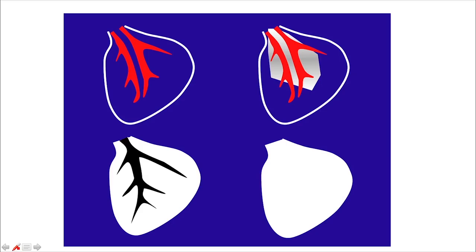For alveolar and interstitial patterns: in the interstitial pattern, the lung is opaque but I can see the vessels, while in the alveolar pattern I cannot. Also in early alveolar disease, I can see air in the bronchi, which is called an air bronchogram.